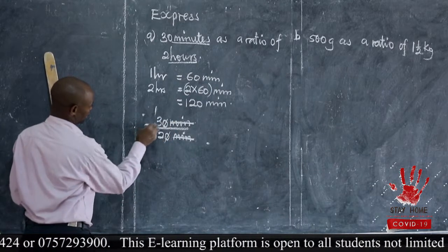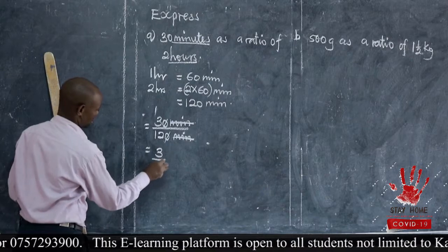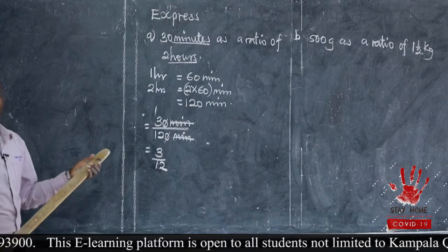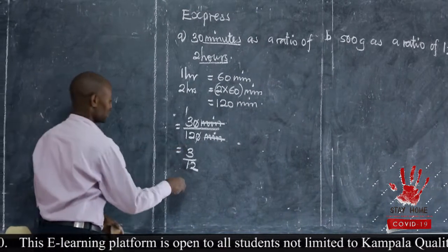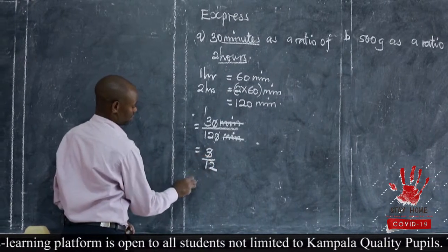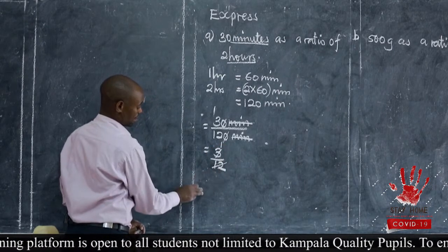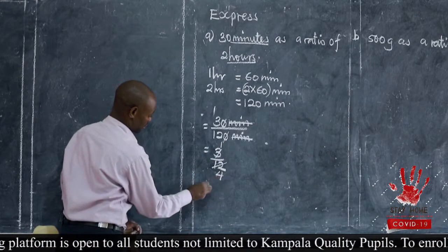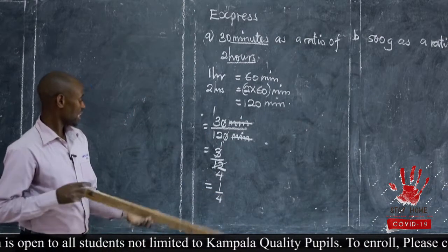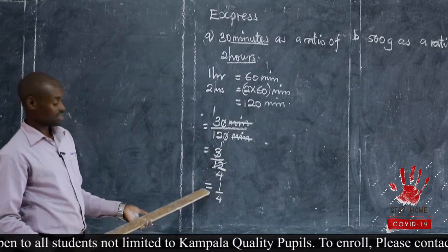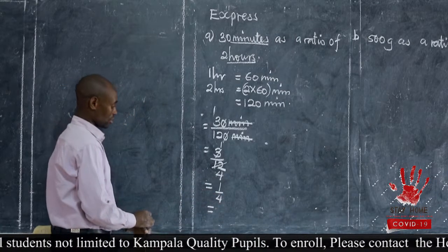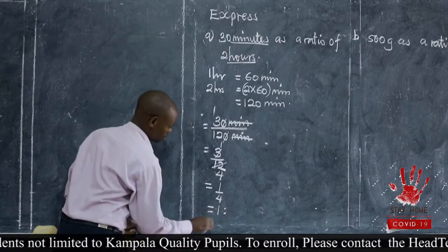Even a zero will go with this zero, so we remain with 3 out of 12. That fraction must be in its simplest form — is this one in its simplest form? No, so we reduce. The common factor is 3. Three divided by 3 gives 1, twelve divided by 3 gives 4. So we get one quarter as our fraction. Since we are expressing as a ratio, the final answer is 1 to 4.